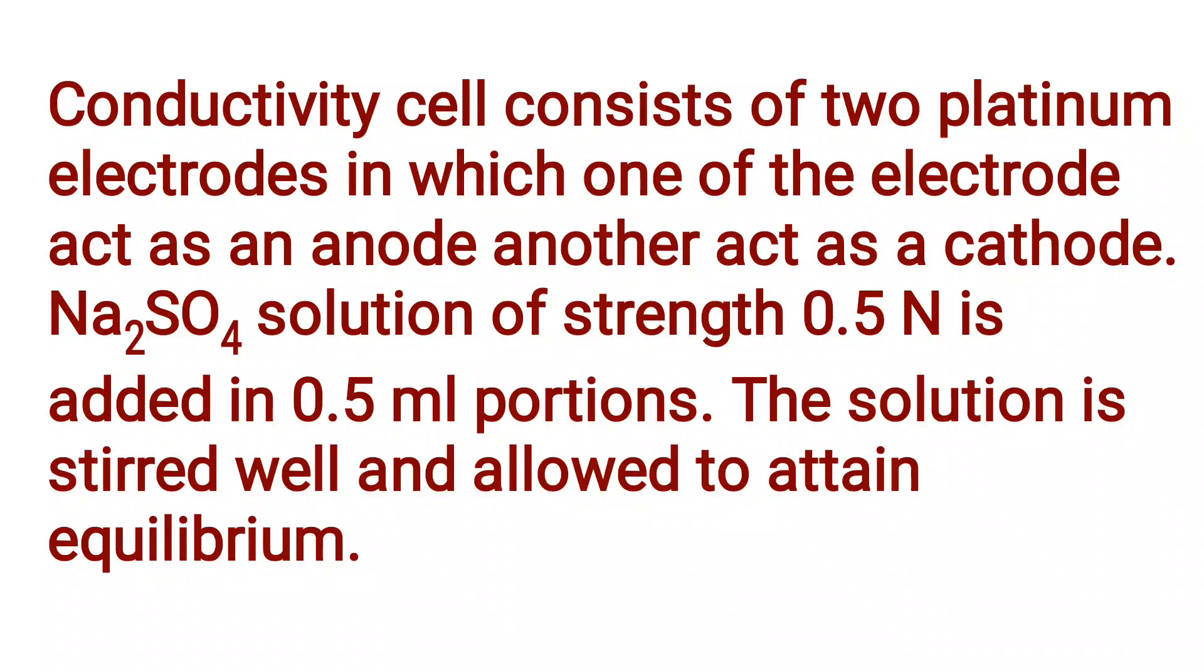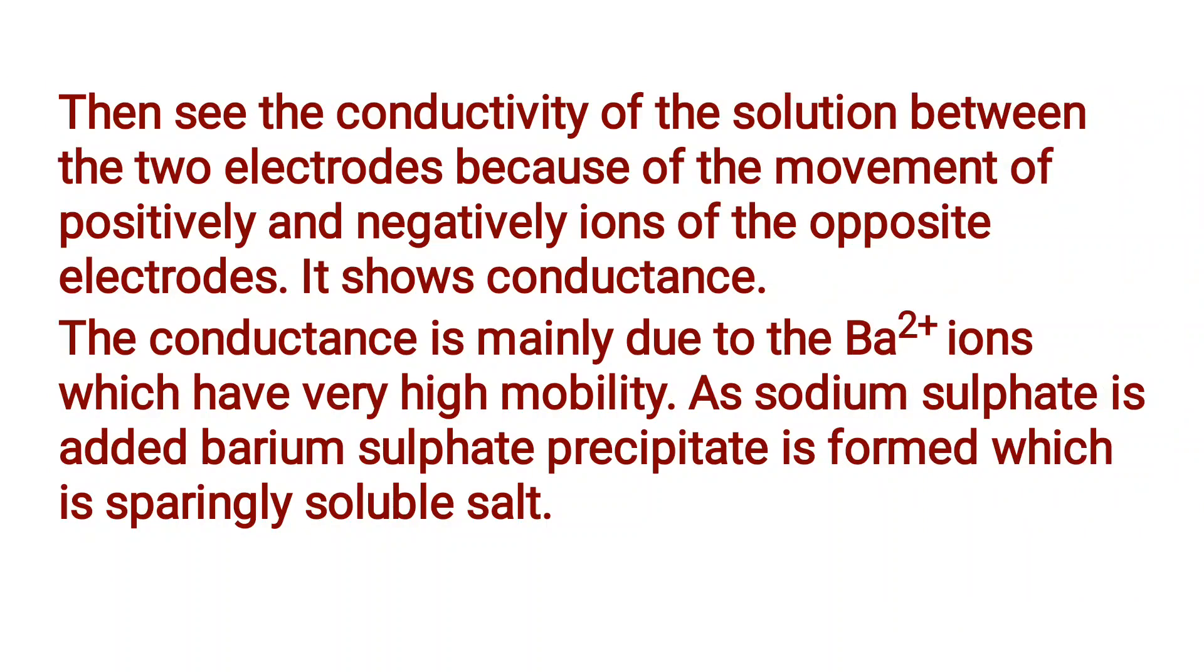Sodium sulfate solution of strength 0.5 N is added in 0.5 ml portions into the beaker. The solution is stirred well and allowed to attain equilibrium. Then, see the conductivity of the solution between two electrodes because of the movement of positively and negatively charged ions to the opposite electrodes. It shows conductance. The conductance is mainly due to the Ba2+ ions which have high ionic mobility.